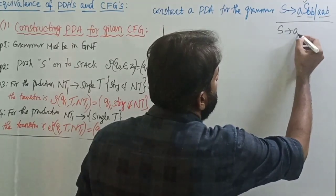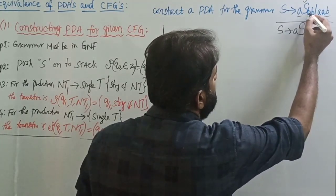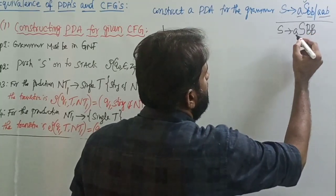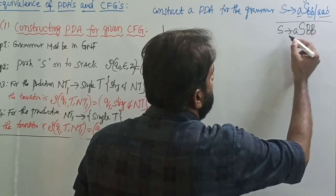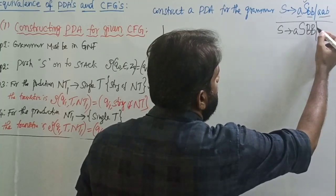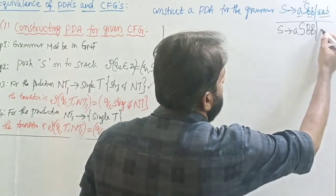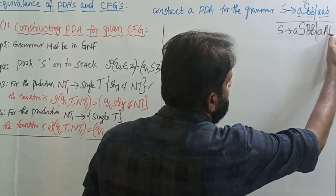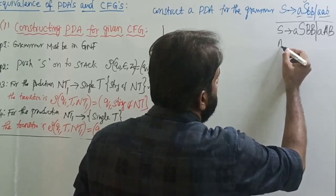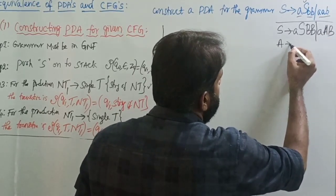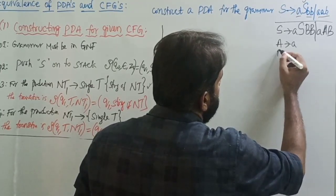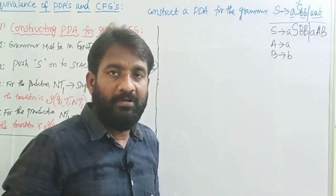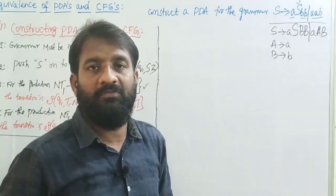So S tends to A — I'm writing capital A; in place of B I'm writing capital B — then slash A. In place of A I'm writing capital A, in place of B I'm writing capital B. Now capital A tends to small a, capital B tends to small b. So this is the grammar after converting to Greibach Normal Form.